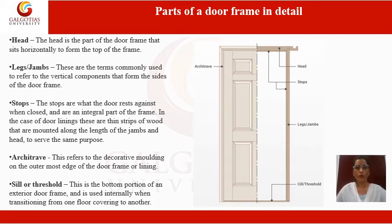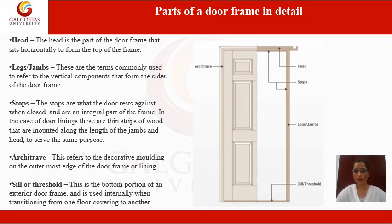Now, parts of the door frame in detail. The head is the part of the door frame that sits horizontally to form the top of the frame. The leg or jamb refers to the vertical components that form the sides of the door frame.